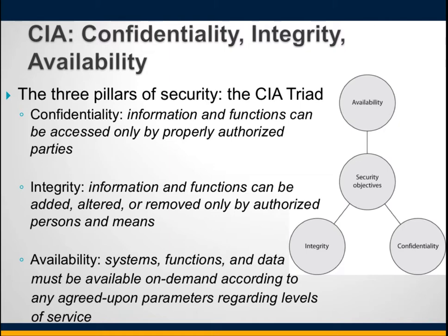Confidentiality, integrity, and availability define the basic building blocks of any good security program, whether defining goals for network, asset, or information system security. These are collectively known as the CIA triad. Although the abbreviation CIA might remind you of the US government spy organization, it is a concept every security professional must know and understand.